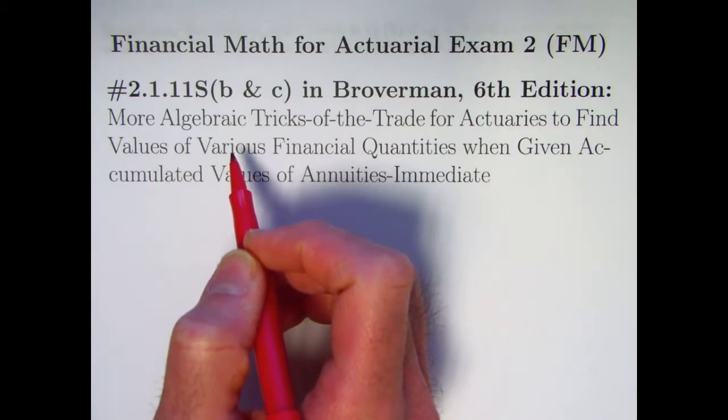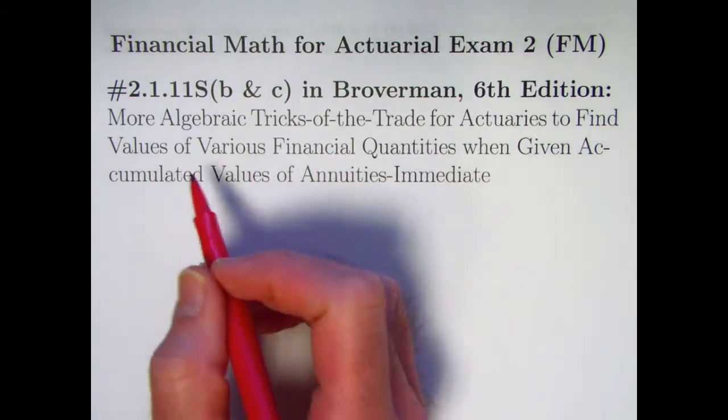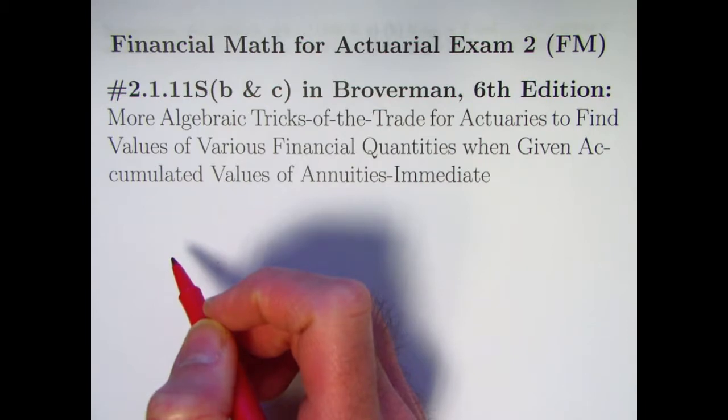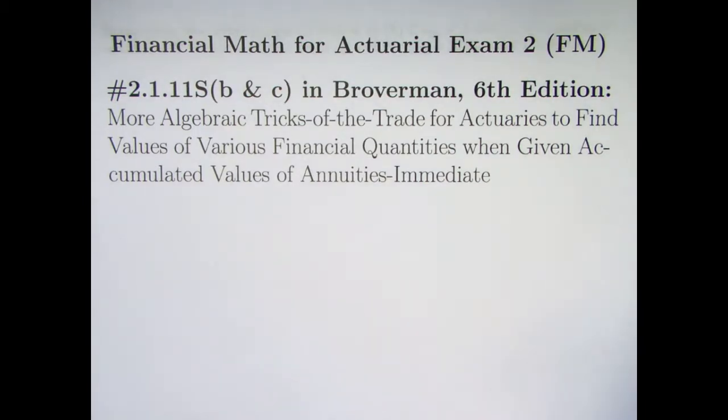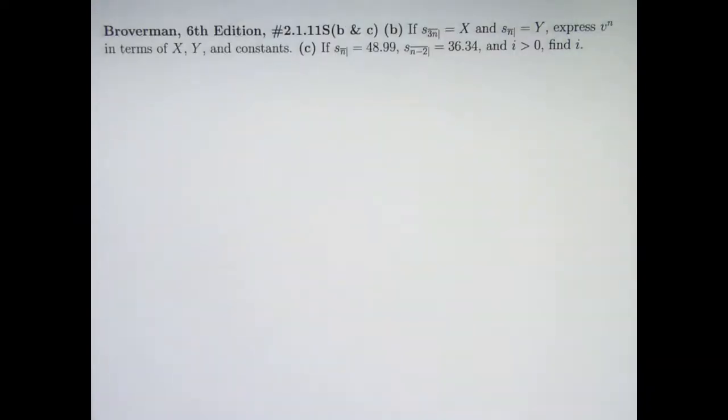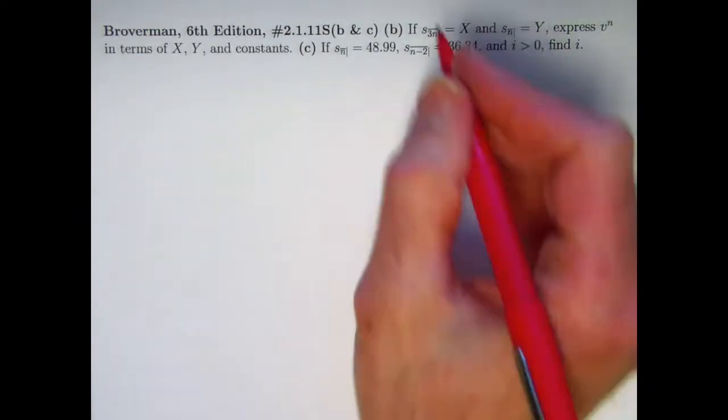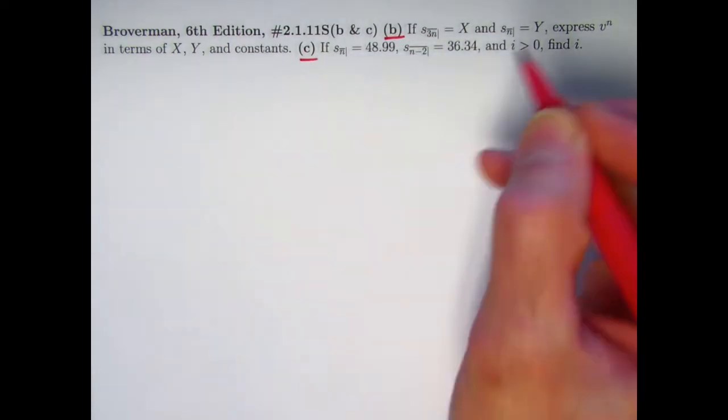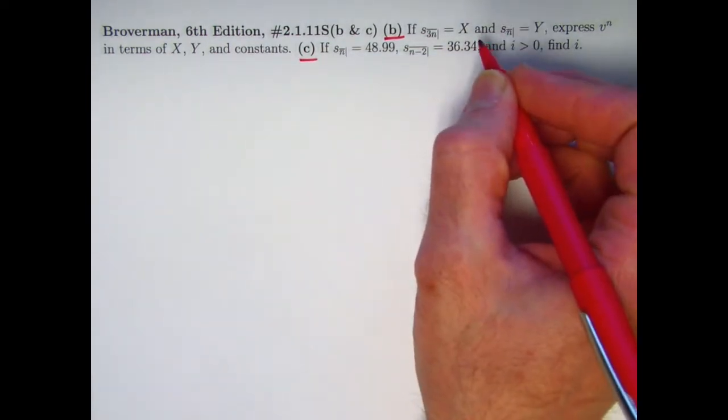Similar to those in the last video, to help us find values of various financial quantities when given accumulated values of annuities immediate. The problem description is longer than the problem statement itself, which is not too bad looking. There's two parts we're going to do, parts B and C. Let's focus on part B first.